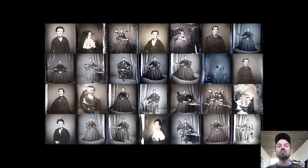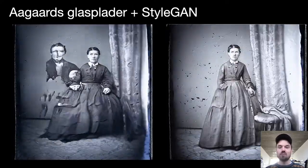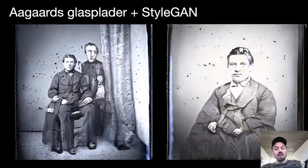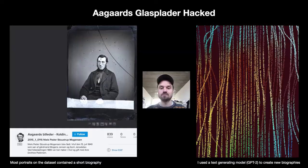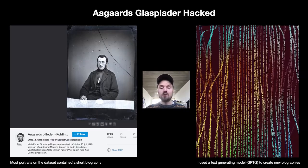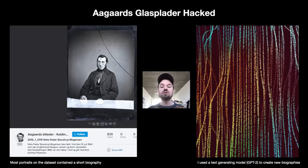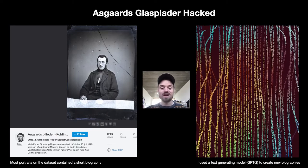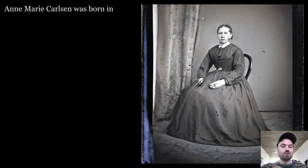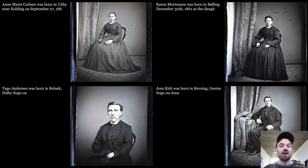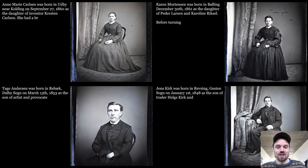AagårdsGlassplader is a collection of high resolution photographs. At a hackathon, I trained a StyleGAN model to generate new images — specifically new people in the same style, as you can see up here. Once the model is trained, it can generate an infinite number of images. The original images also have biographies, so I used a text generating model called GPT-2 to generate new biographies for the people I generated. People that don't exist will have new biographies — I want to imagine how the lives of these people might have been.